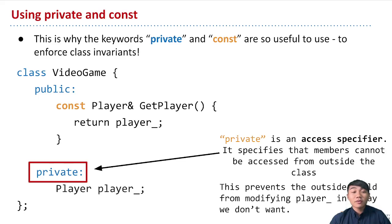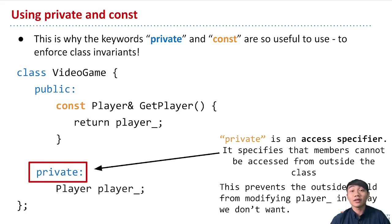Within this video game class, the player member variable can't be modified or accessed from outside of the class unless we provide an accessor function within the public section. Nobody can access the private member variable directly, which means we can guarantee that no one outside of the video game class can modify player in a way that we wouldn't want them to.